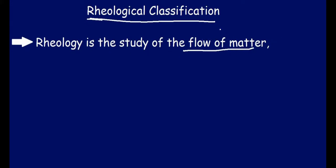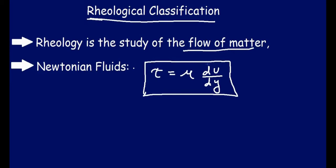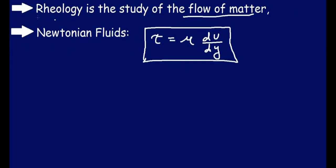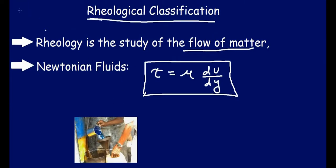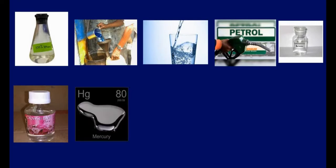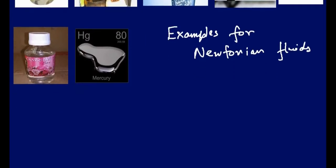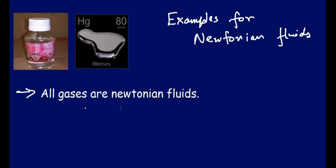First we will discuss Newtonian fluids. In the last class we derived tau equals to mu times du/dy, and this is known as Newton's law of viscosity. Fluids which follow this behavior are known as Newtonian fluids. Examples of Newtonian fluids are kerosene, water, petrol, ethanol, benzene, glycerine, and mercury. Additionally, all gases are Newtonian fluids.